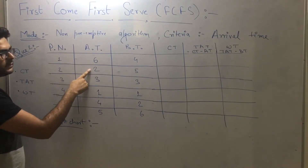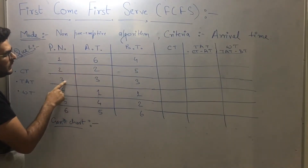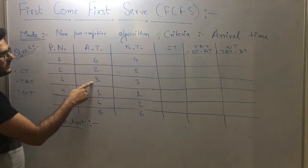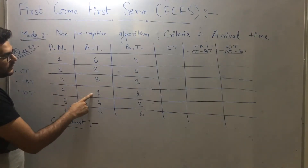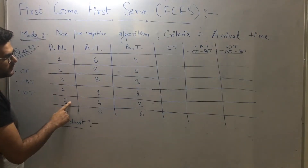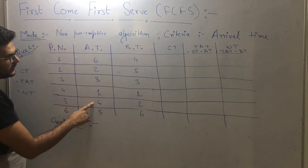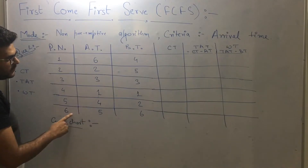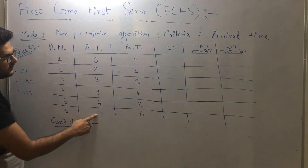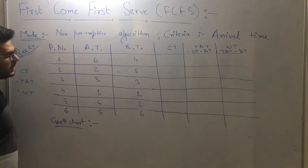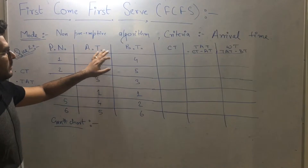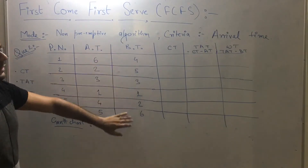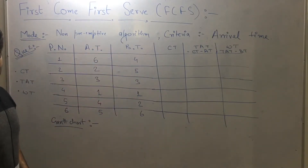Process two arrived at time two, process three at time three, process four at time one, process five at time four, and process six at time five. Along with these arrival times, they have also given the burst time of each process.